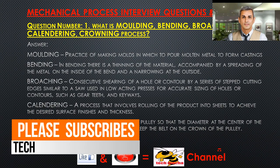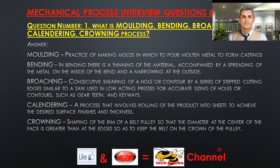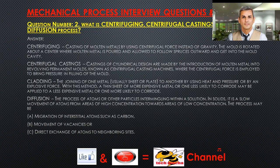Calendaring: a process that involves rolling of the product into sheets to achieve the desired surface finishes and thickness. Crowning: shaping of the rim of a belt pulley so that the diameter at the center of the face is greater than at the edges, so as to keep the belt on the crown of the pulley.